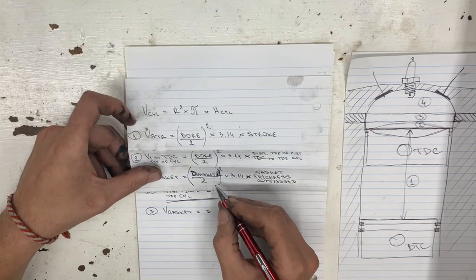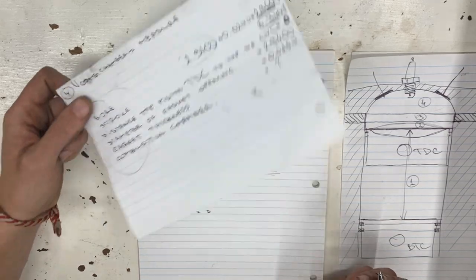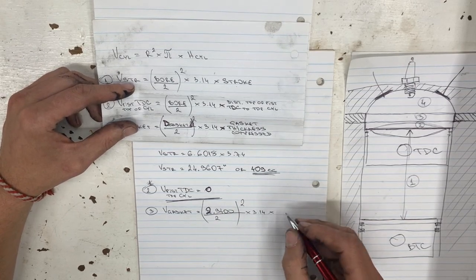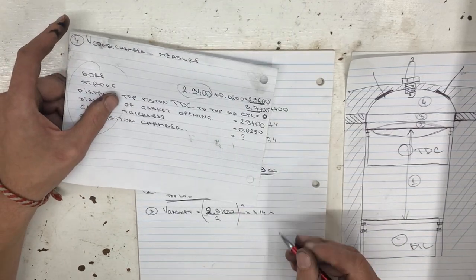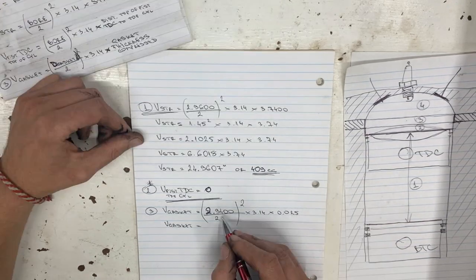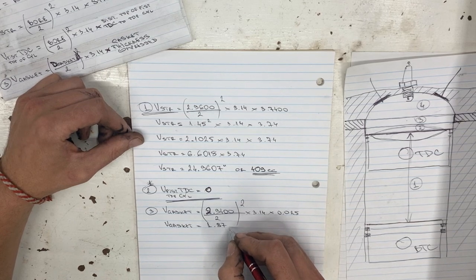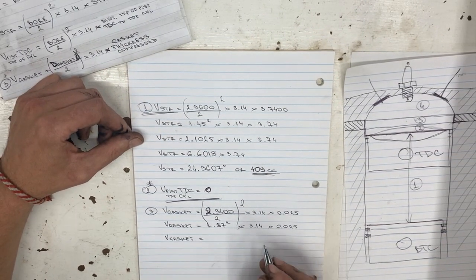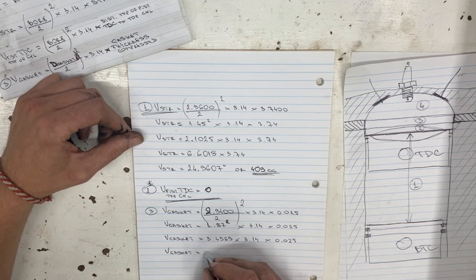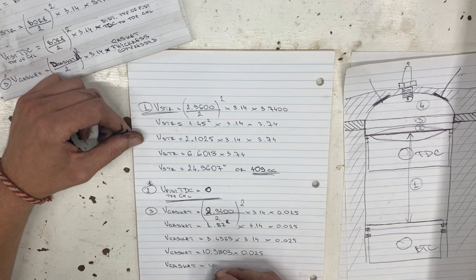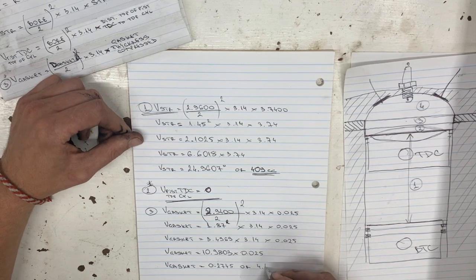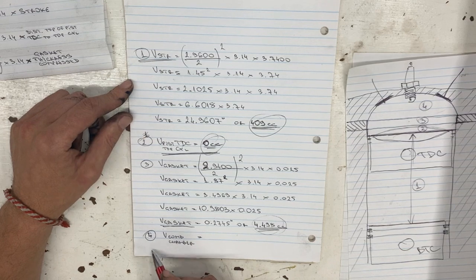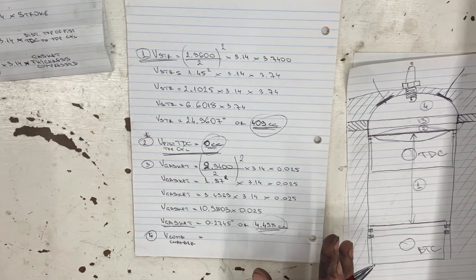The last thing is our gasket volume. That equals the diameter of the gasket divided by 2, squared, times 3.14, times the gasket thickness of 0.025 inches. The diameter of the gasket is 2.9400. Note: I also made an error here - I wrote 1.87 when it should be 1.47. Working through this gives approximately 0.2745 cubic inches, which equals about 4.5 cubic centimeters. Now the only thing we still need for our calculation is the volume of the combustion chamber, which we need to physically measure.